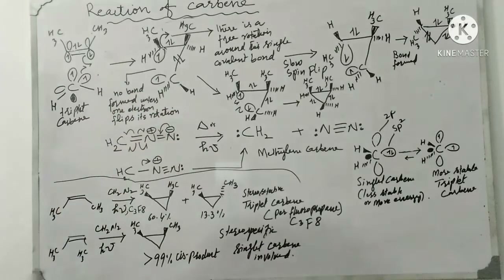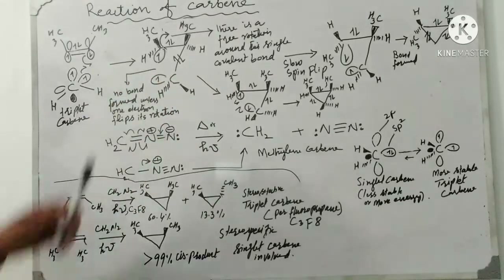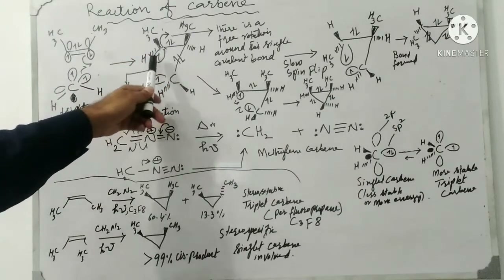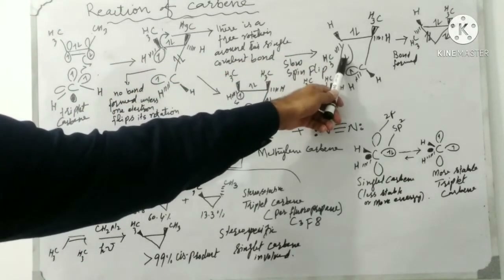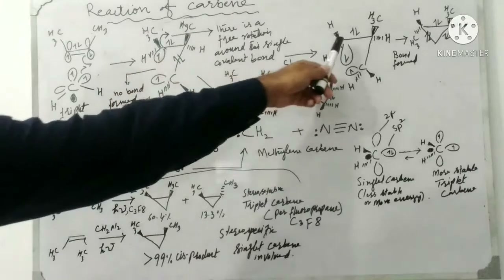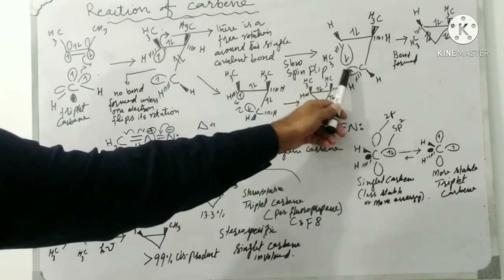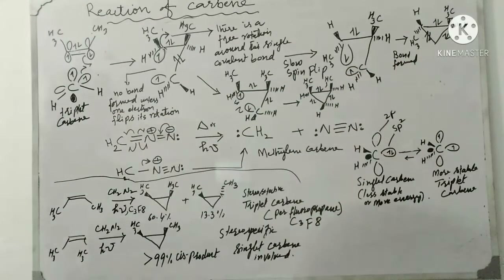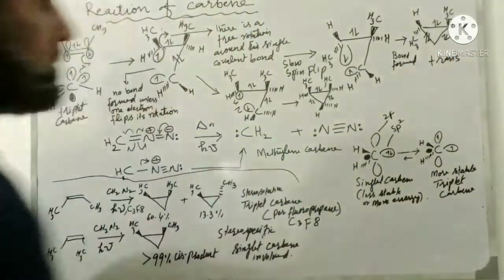Because of this slow spin-flip step, there is free rotation around the single covalent bond before ring closure. When the bond rotates, the methyl group that was above the plane comes below the plane. After the electron changes its spin, the new sigma bond can form, but now the stereochemistry is different — starting from cis-2-butene, the trans-cyclopropane product is formed.